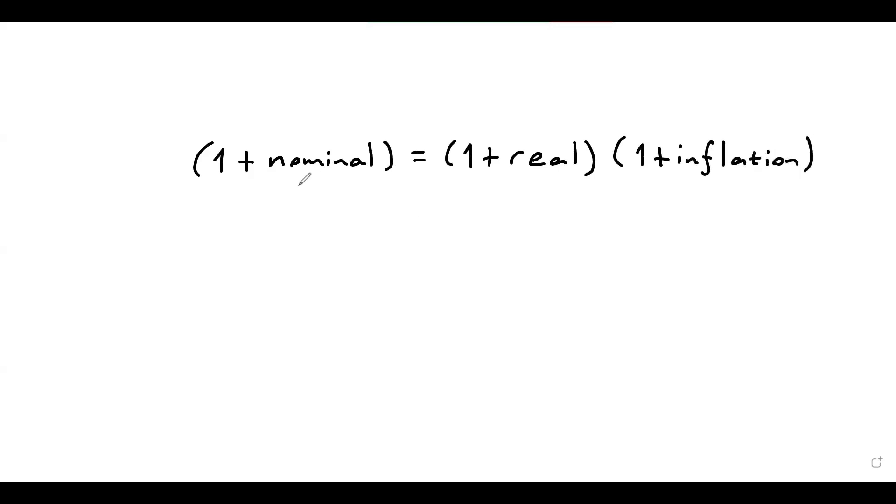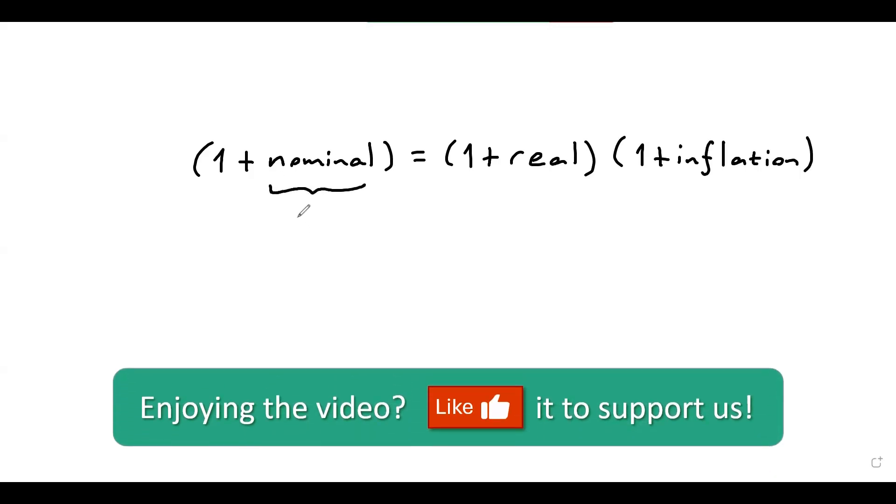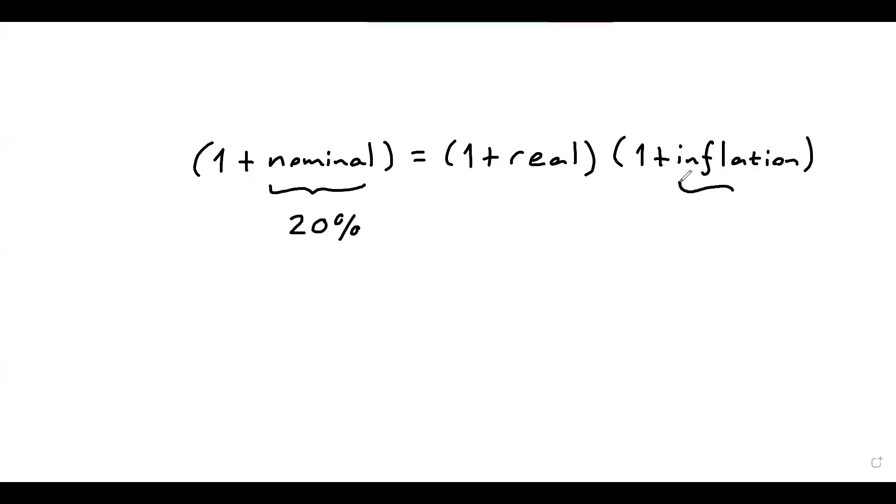Now, in our example, the nominal rate of return was 20%. And let's suppose the rate of inflation is 10%. So what would be the real rate of return in this scenario? This means that the basket was originally worth $2,000. Now the value has increased to $2,200, a 10% change in value. So I can solve for the real rate of return as follows.